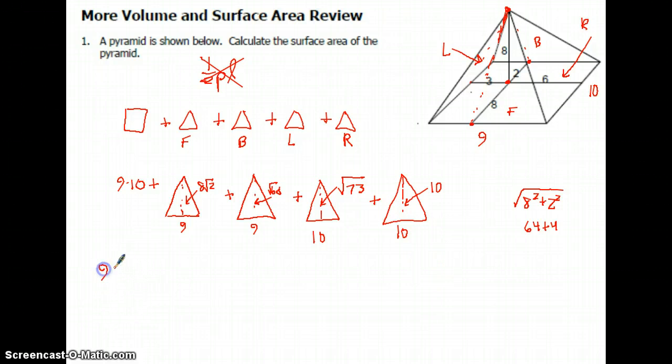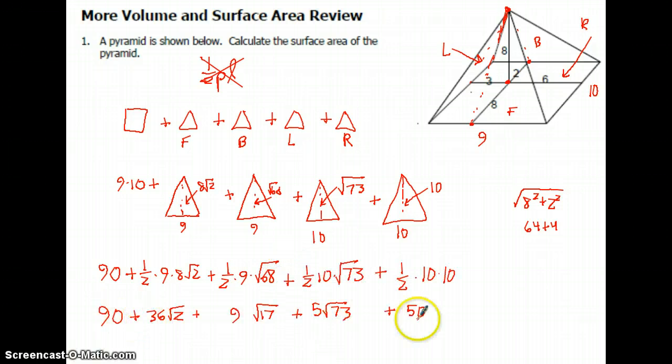So I have 90 plus half base times height plus half base times height. I'm about to run out of time. I realized that the 68 could be reduced to 2 times the square root of 17. And the next step, about the only thing you can do, the only like terms here, the 90 and the 50, you can call that 140, but then it's calculator time for the approximation, and it all comes out to be something like that. All right, time for the next video.